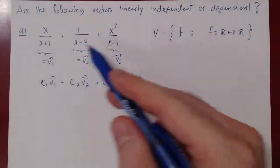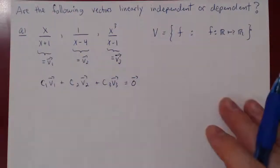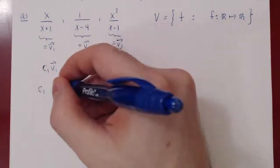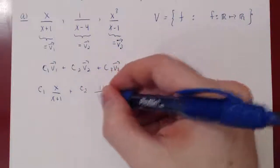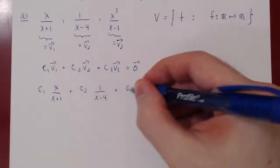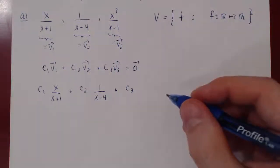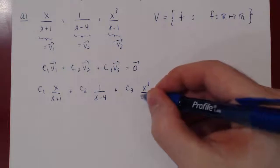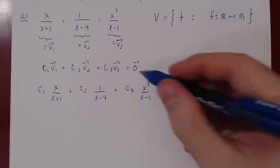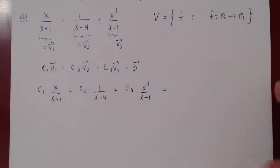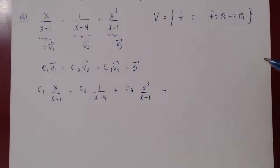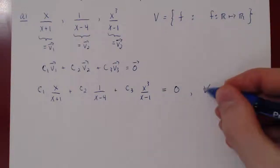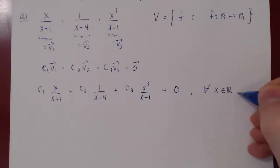Let's rewrite our three rational functions. We have c1 times x over (x+1), plus c2 times 1 over (x−4), plus c3 times x³ over (x−1), and this is equal to the zero vector. Since we have a space of real functions, the zero element is the zero function — the function equal to zero for all real values of x.